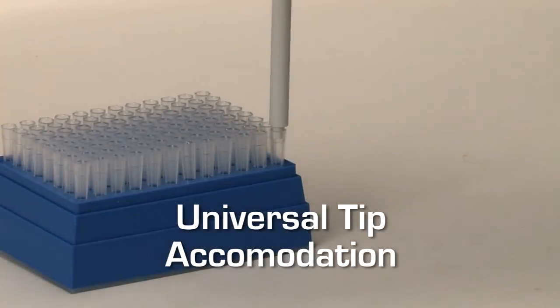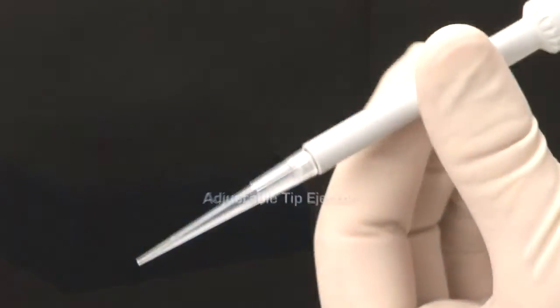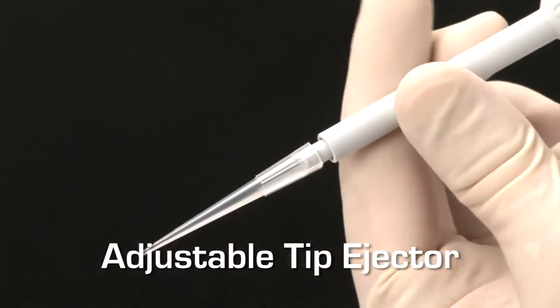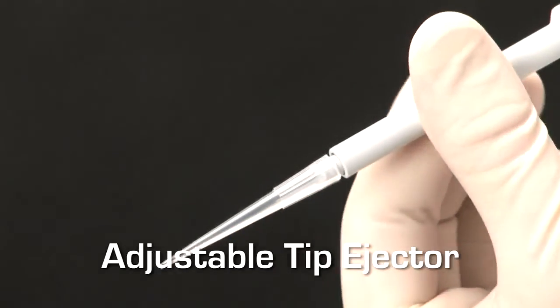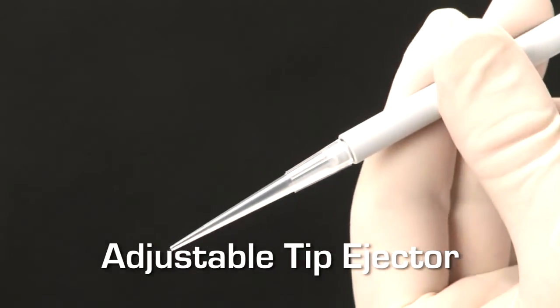Acura Manual Pipettes can be used with most popular brands of disposable tips. The tip ejector can be adjusted by the user so that it's always in the best position for effortless tip disposal.